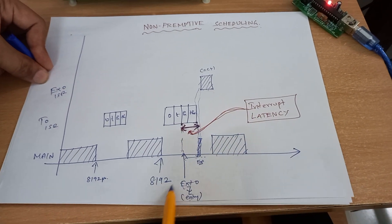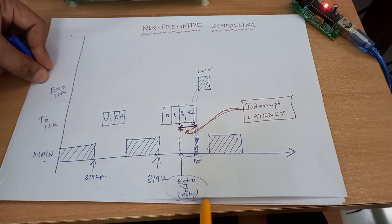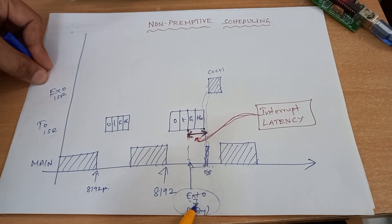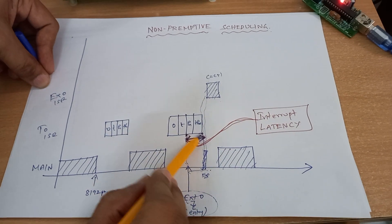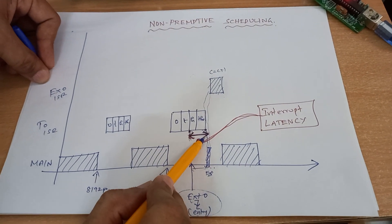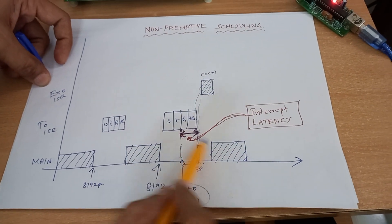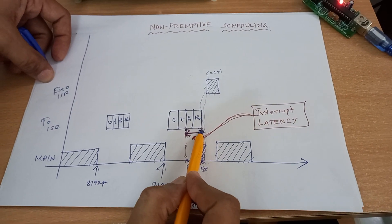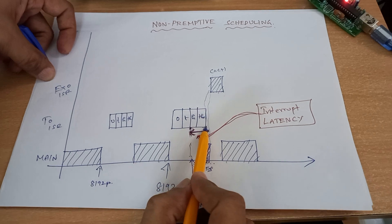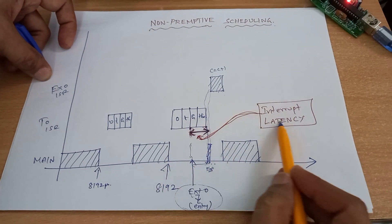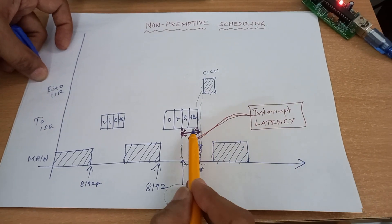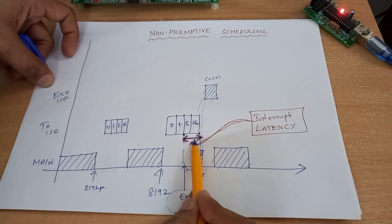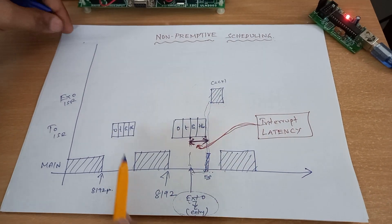Even though external interrupt 0 has higher priority than timer 0 interrupt, external interrupt 0 will wait until timer 0 returns from the interrupt service routine. This waiting time — where external interrupt 0 is waiting until timer 0 ISR returns — is called interrupt latency. This latency is because of the non-preemptive nature of AT51.